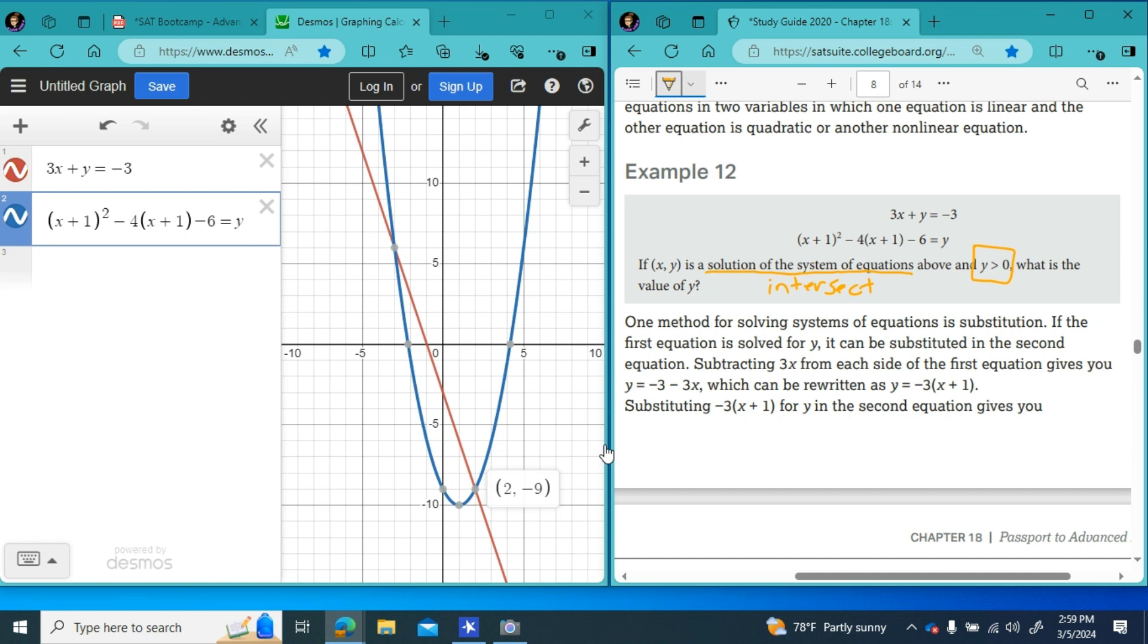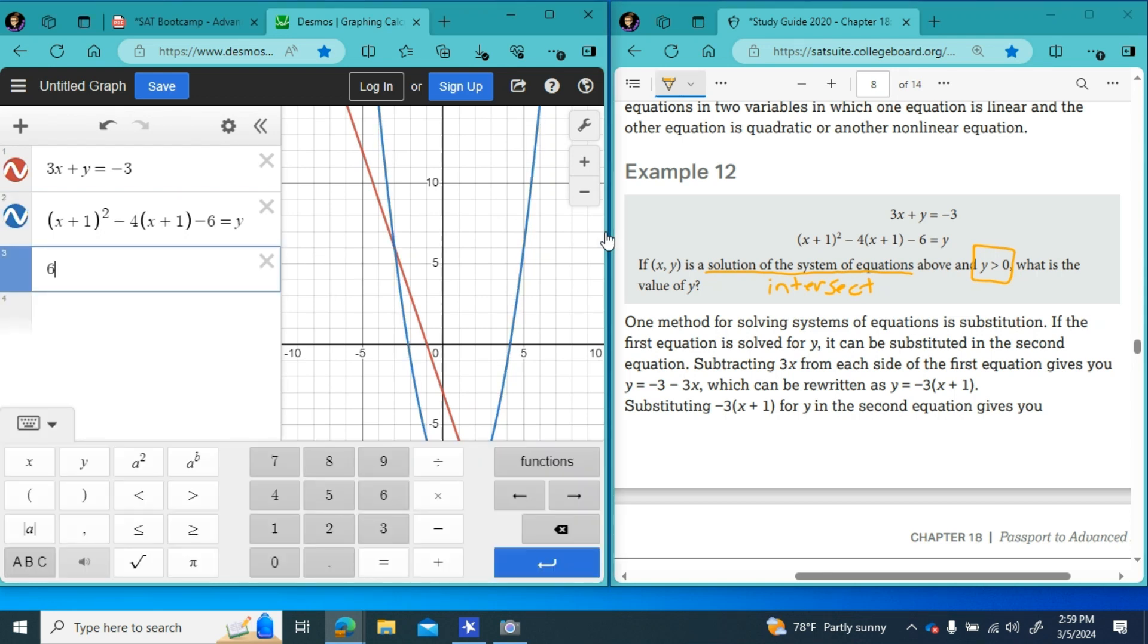A solution to a system of equations is just where the two lines intersect or touch. So that's here at 2, negative 9 and up here at negative 3, 6. And it says the y value has to be greater than 0. So if I went to put in this y value, it would be negative 9. And that can't be the answer because y must be greater than 0. So we would come here to where your y value is a positive 6. And you would just type that in. That is the answer to that question.